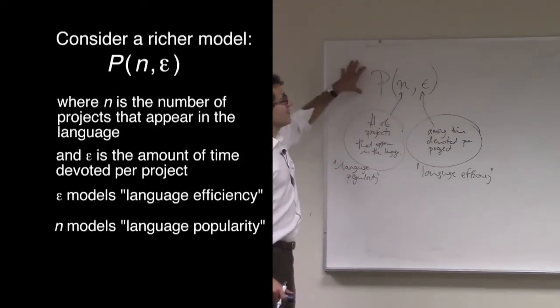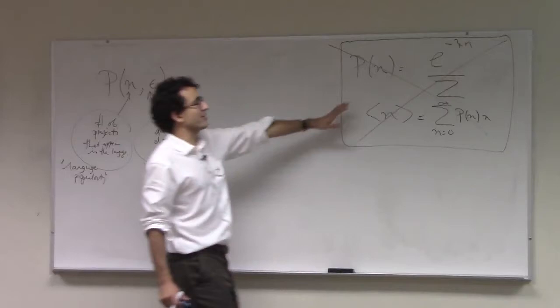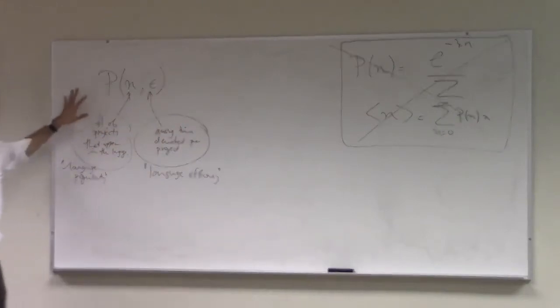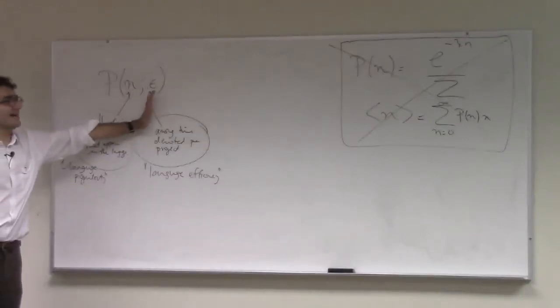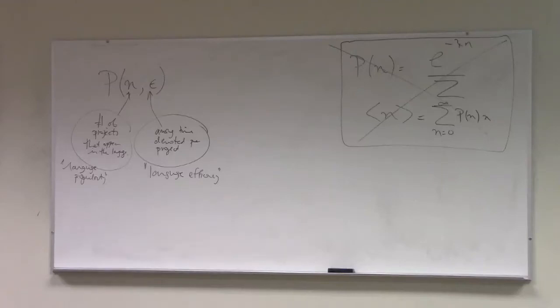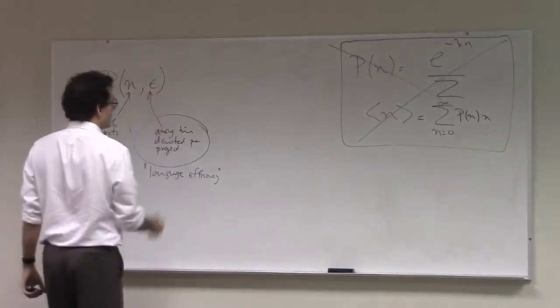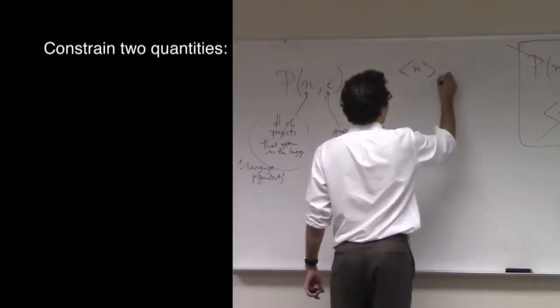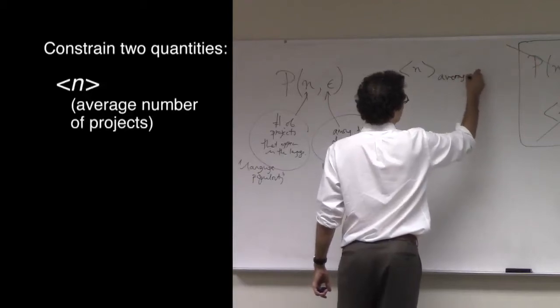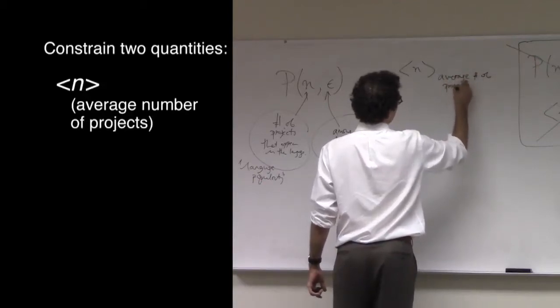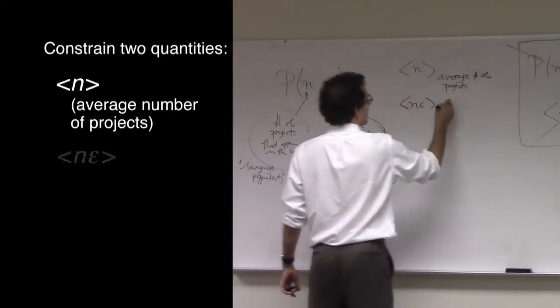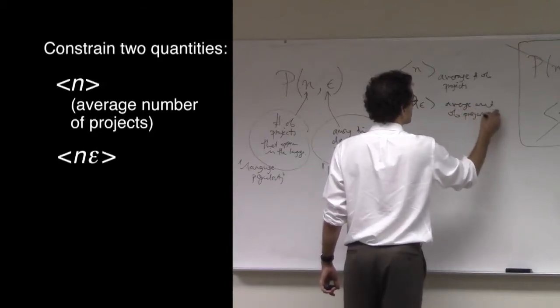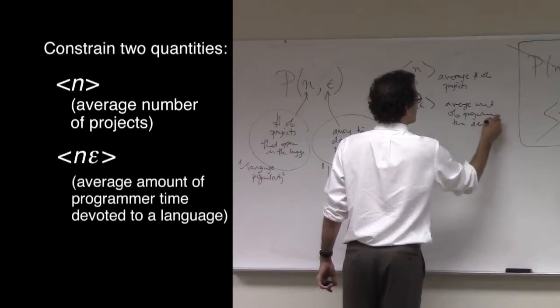The intuition here is that now we're trying to describe two things at once. Previously we were building a model that only included one variable, popularity. Now we're going to try to build a model that has two variables, popularity and efficiency, or amount of time devoted per project. So what we're going to do is constrain two quantities. As before, we're going to constrain average number of projects.